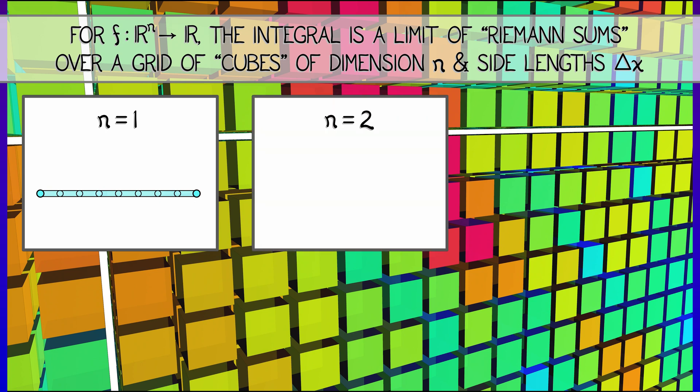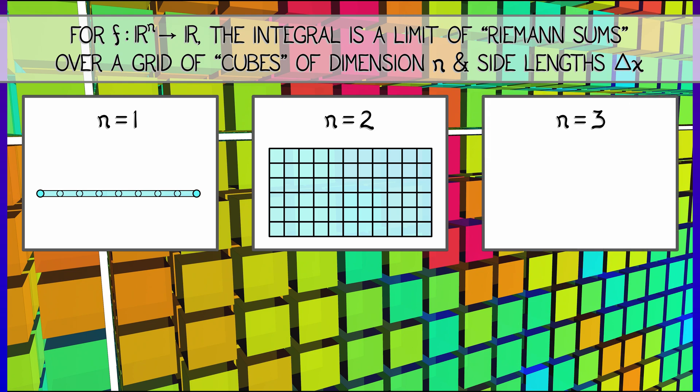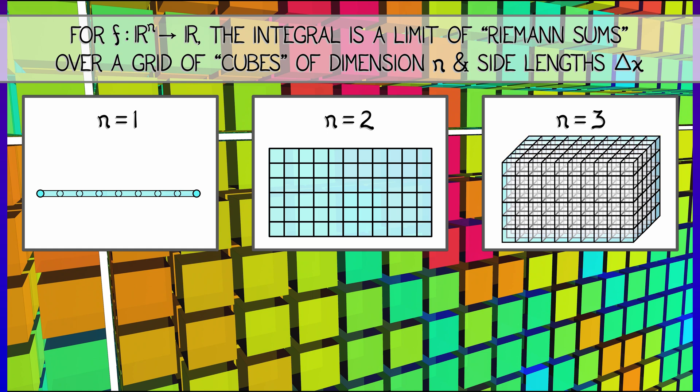What would this look like in 2D? In 2D, we would fill the plane up with squares of side length delta x, and then sample the function there. In 3D, we would fill up three-dimensional space with cubes of side length delta x. And in higher dimensions, you're going to have to use your imagination.